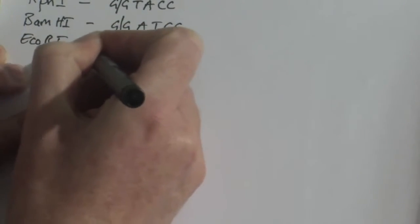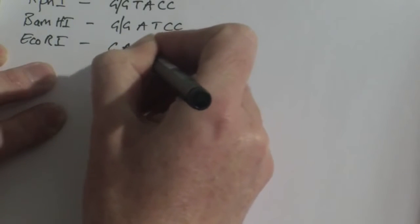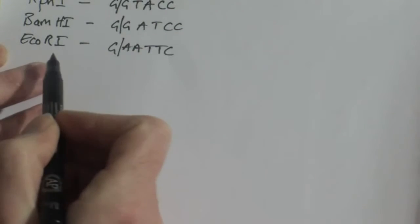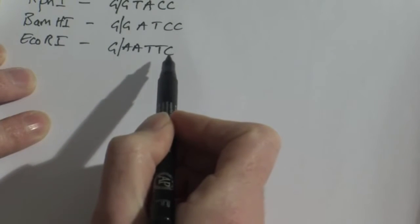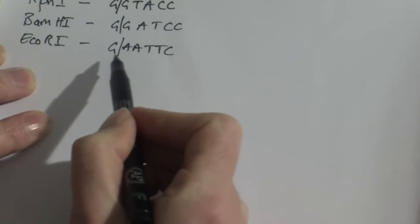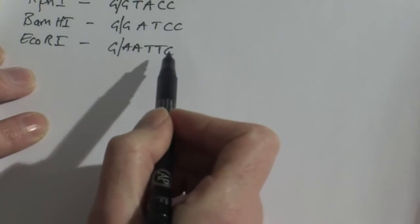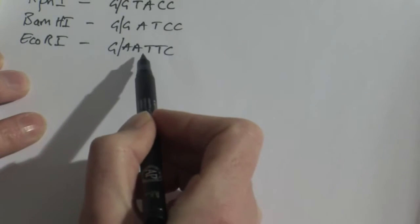ECO-R1, for example, will cut G A A T T C and it cuts between the G and the A. Now I don't know those restriction sites, the sites where the enzymes cut, I don't know those restriction sites off the top of my head and you wouldn't need to know them either, you look them up in the book.